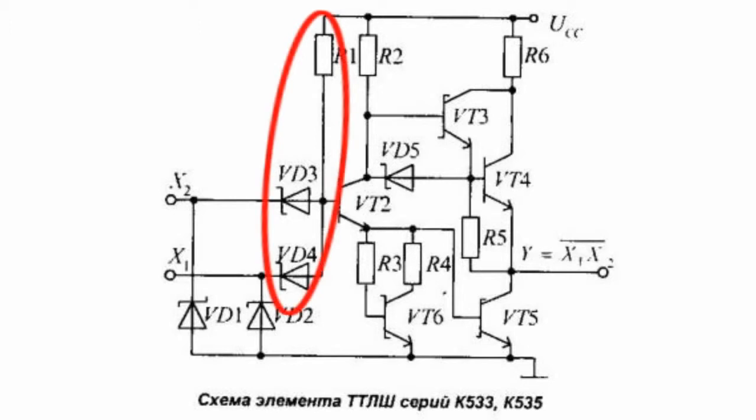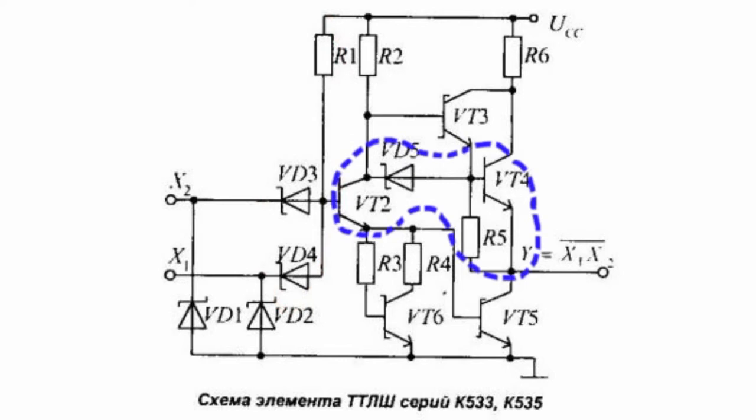The input stage is formed by a coincidence circuit of VD3-VD4 diode and R1 resistor. The collector of a VT2 transistor is additionally connected to the base of VT4 transistor via a VD5 diode and a R5 resistor. It reduces the recharge time for parasitic load capacitance.